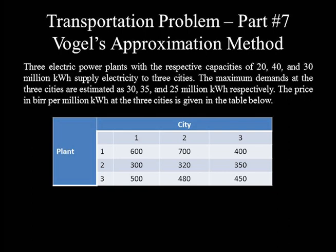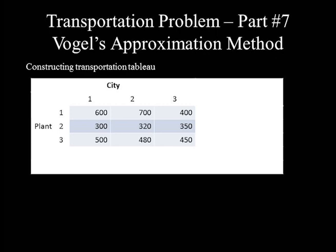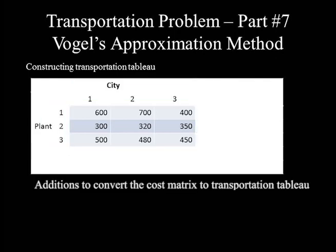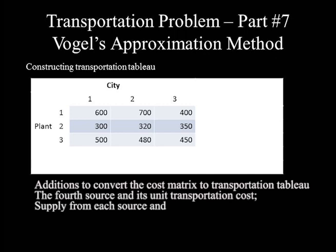Before proceeding to the steps of Vogel's approximation method, we have to construct a transportation table, because the transportation simplex method uses this table for setting initial feasible solutions and for optimizing them. So let's construct the table starting from the cost matrix. The given cost matrix contains three power plants as sources and three cities as destinations, with unit transportation costs for each source-destination pair. Additions needed to translate it into a transportation table are the fourth source and its unit cost, the supply from each source, and the demand of each destination.